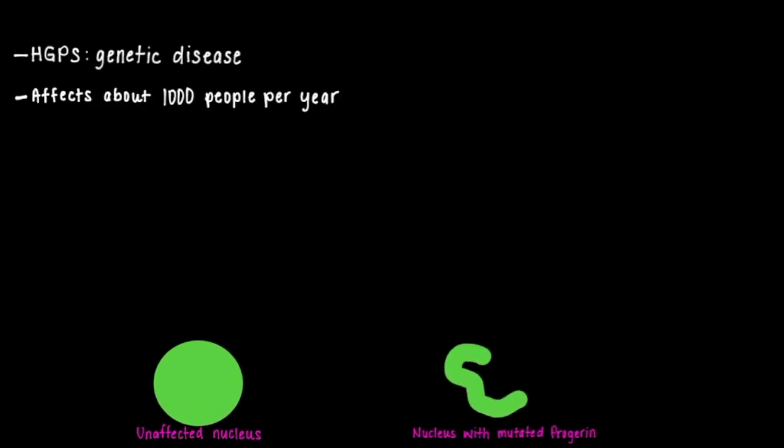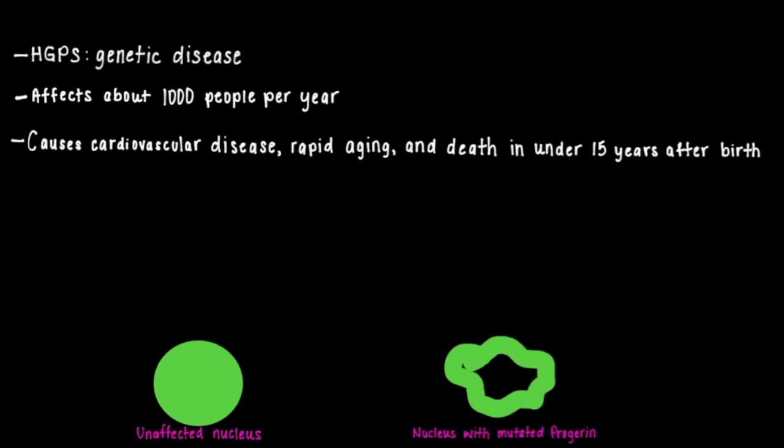Hutchinson-Guilford Progeria Syndrome is a rare genetic disease affecting less than 1,000 people globally per year. It presents immediately and progresses from birth causing cardiovascular disease, rapid aging, and eventual death.